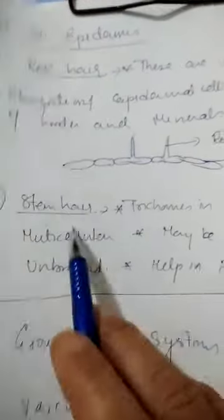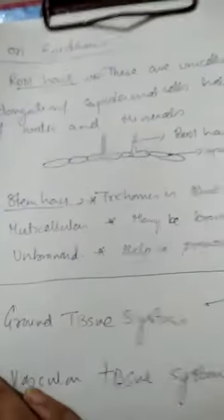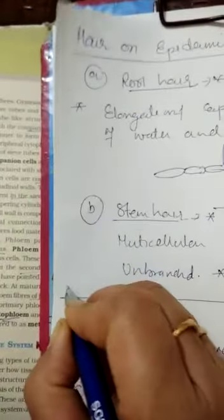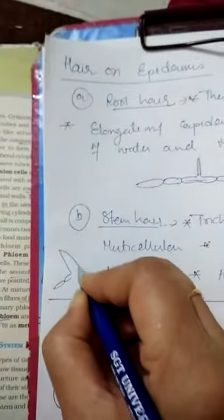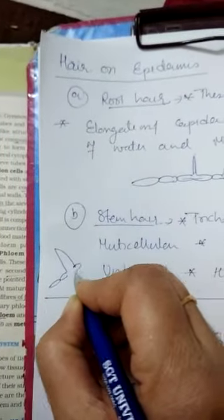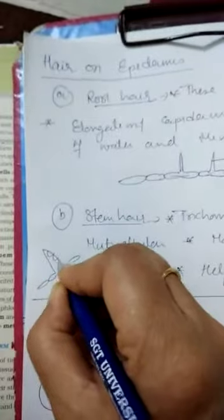Now the stem. In stem actually, here I have not drawn the diagram. I will draw it just now. Suppose this is the epidermis of stem. So here the multicellular hair is present. Suppose this is one of the epidermis cell. So here the multicellular...